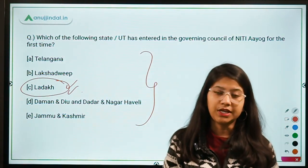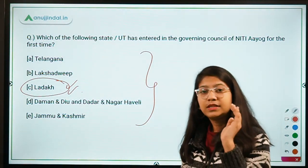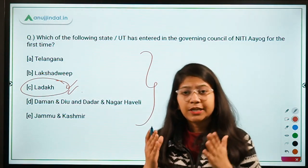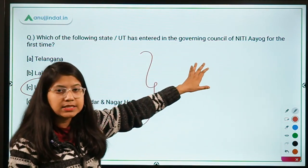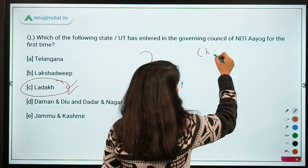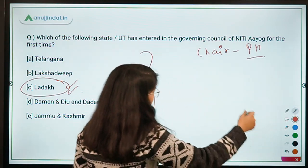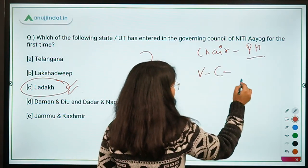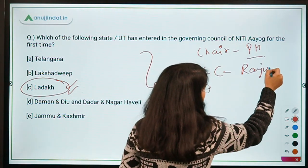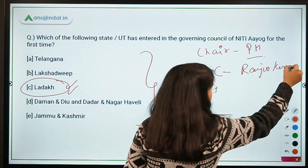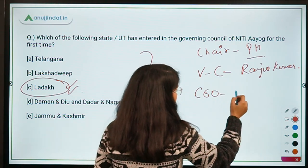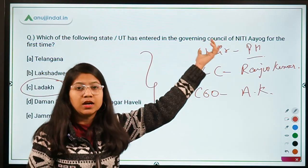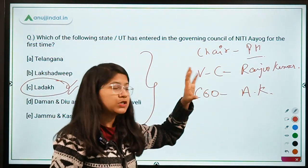Ladakh is the union territory that has entered the governing council for the first time. The important designations in this governing council are: Chairperson is the Prime Minister ex-officio — presently Narendra Modi; Vice Chairperson is Rajiv Kumar; and CEO is Amitabh Kant. These are the three very important designations in NITI Aayog.